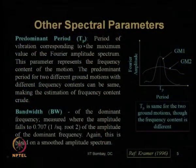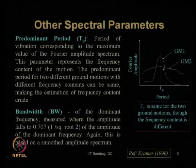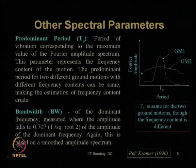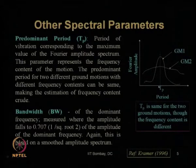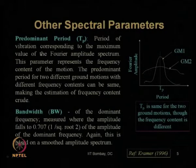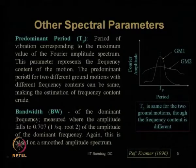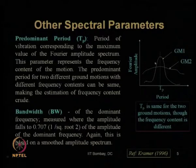We also discussed predominant period T_p. It is not necessary that the Fourier amplitude of two ground motions needs to be the same to have the same predominant period — they can have different Fourier amplitudes, but their predominant period can be the same. The predominant period is the period corresponding to the maximum value of the Fourier amplitude spectrum, and represents the frequency content of the motion.